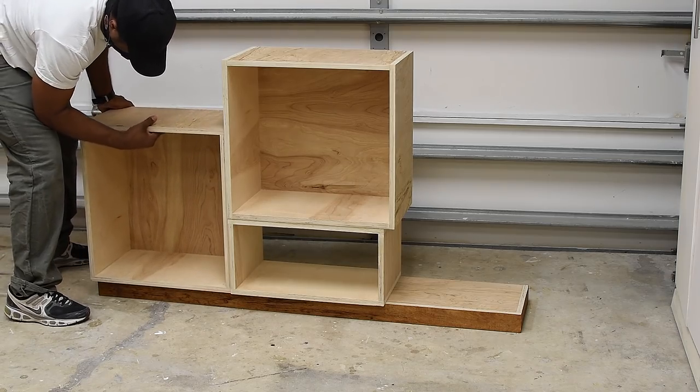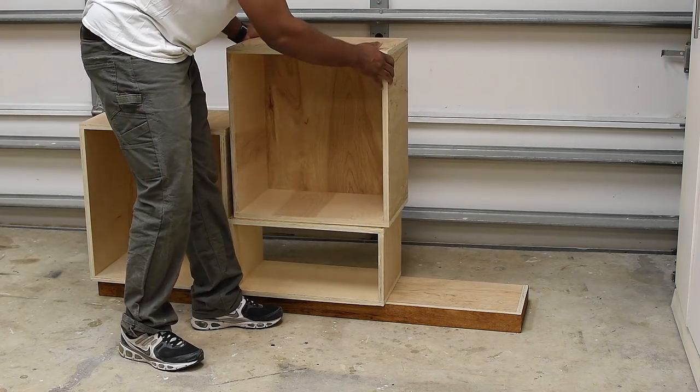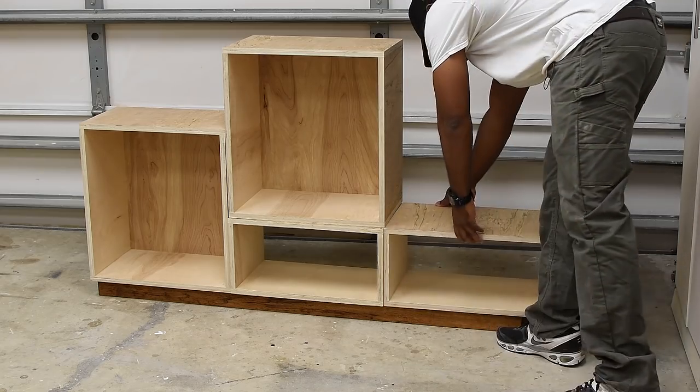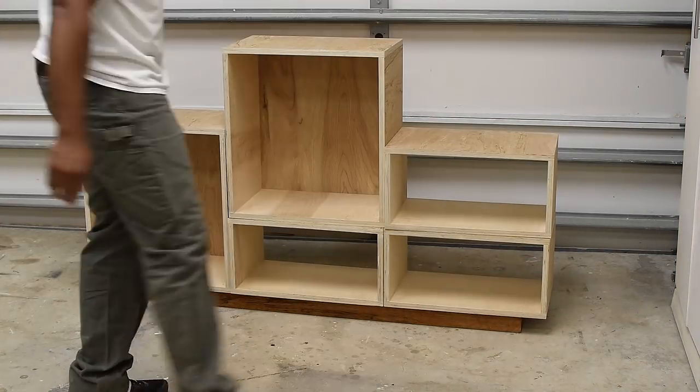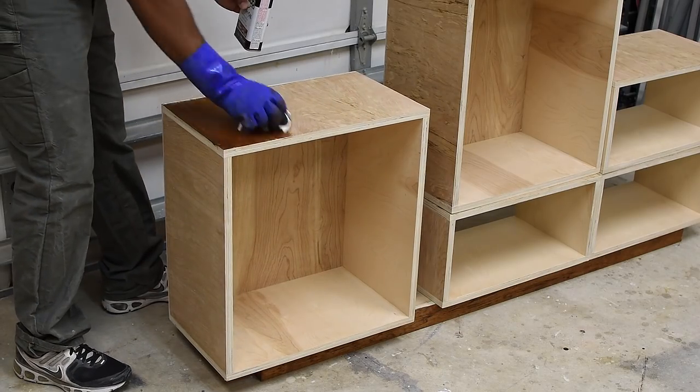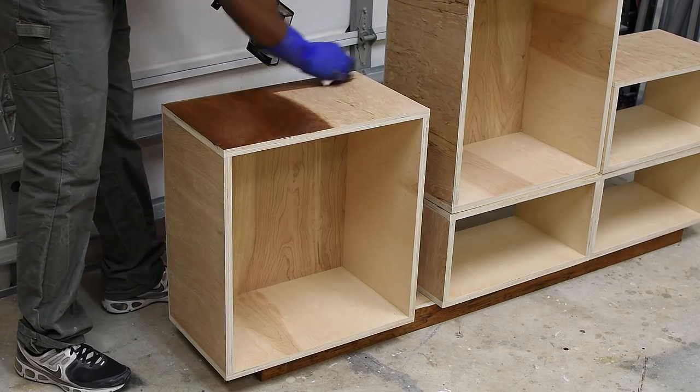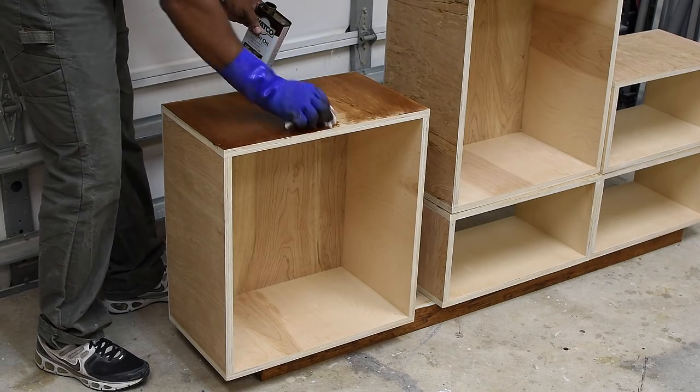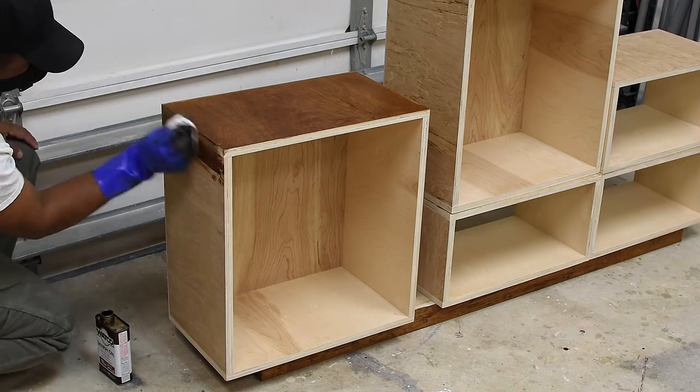Danish oil seeps into the wood so it's a little different from stain and that makes it really hard to remove from the wood. Once I have my desired setup, I can finish applying the Danish oil. And I'll do one piece at a time just to make sure that I like the direction I'm going.